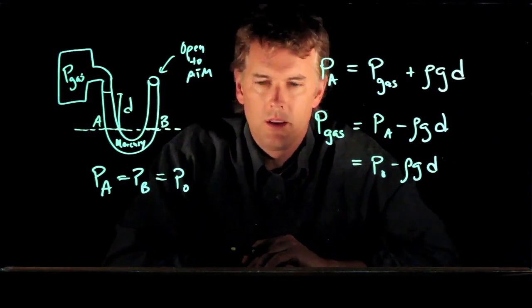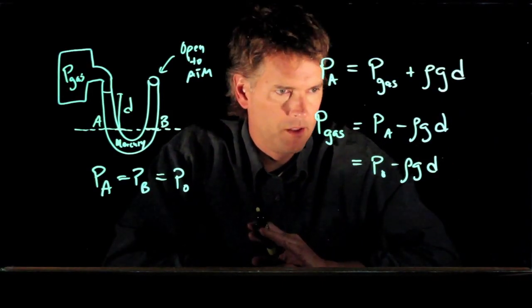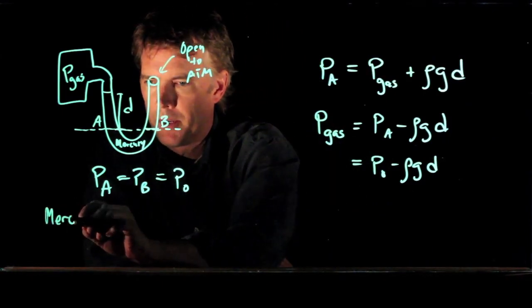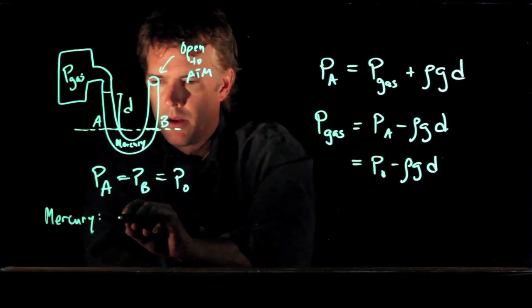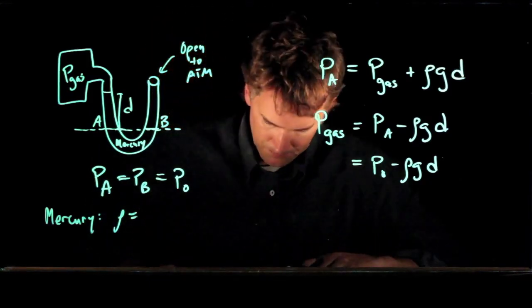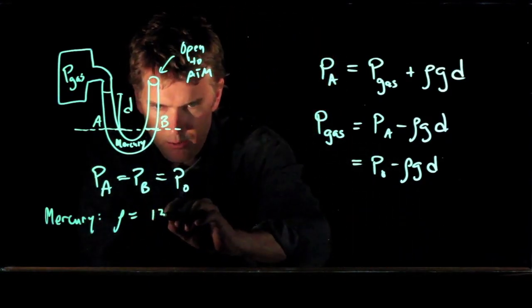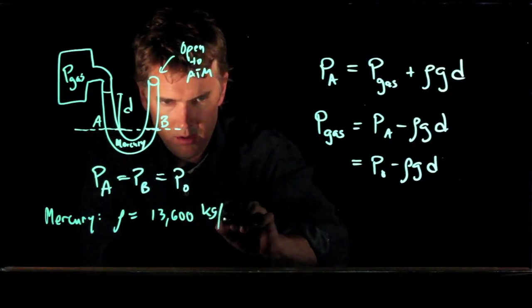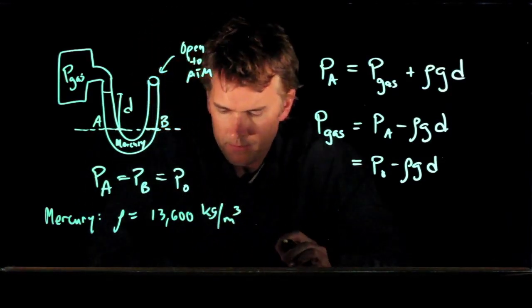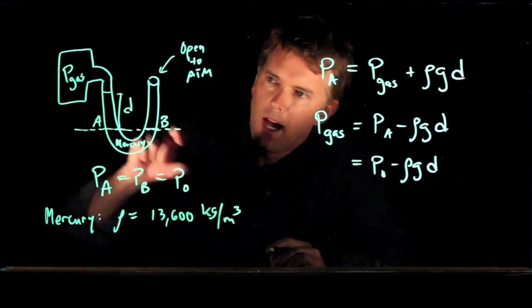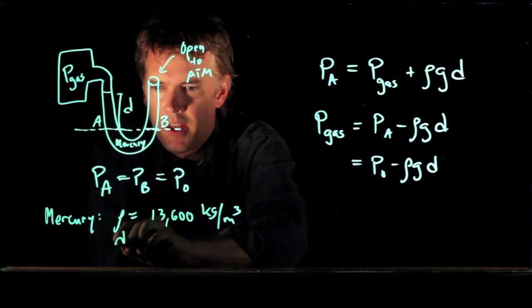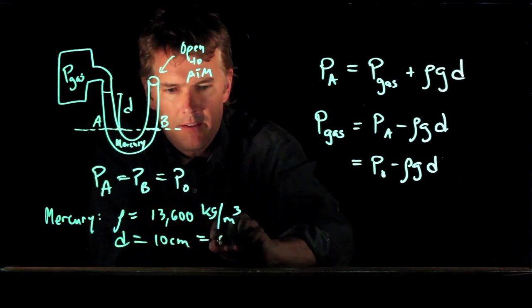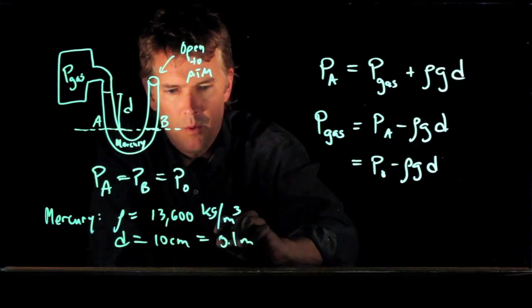And now let's plug in some realistic numbers. So what is rho for liquid mercury? Rho is equal to 13,600 kilograms per cubic meter. And let's take a height difference of 10 centimeters. 10 centimeters in SI units is 0.1 meters.